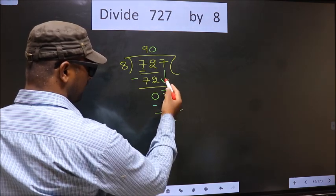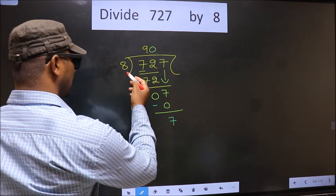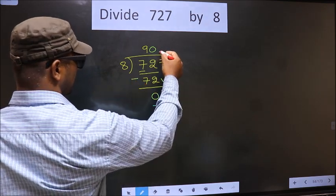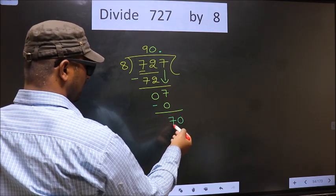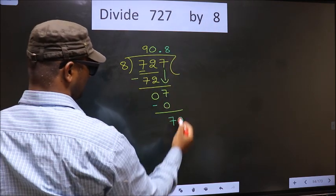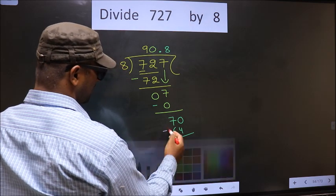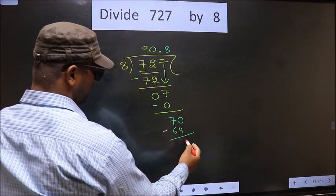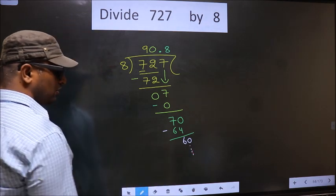Over here we did not bring any number down, and 7 is smaller than 8. So now we can put a dot and take 0 here. 70 here. A number close to 70 in 8 table is 8, 8, 64. Now you subtract. 70 minus 64 is 6. You take 0, continue the division. I am not doing that.